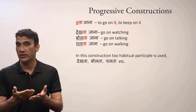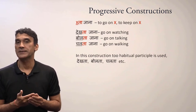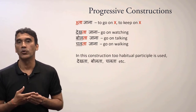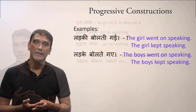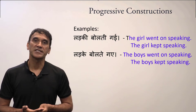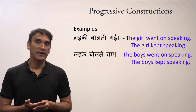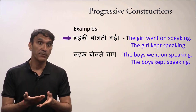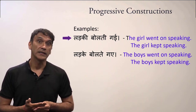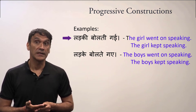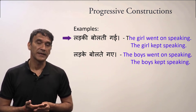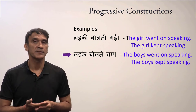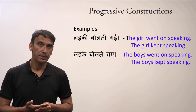In these constructions, the habitual or imperfective participle is used, such as dekta, chalta, bolta. The habitual participle changes according to the number and gender of the subject. For example: ladki bolti gai - the girl went on speaking, the girl kept speaking; ladke bolte gai - the boys went on speaking, the boys kept speaking.